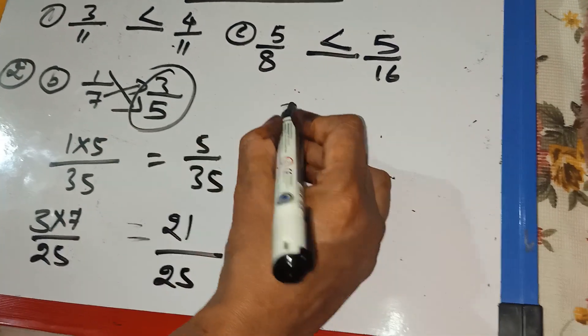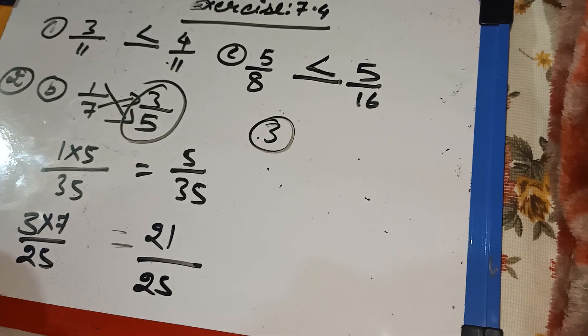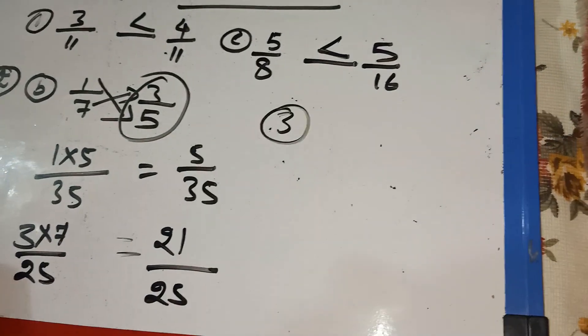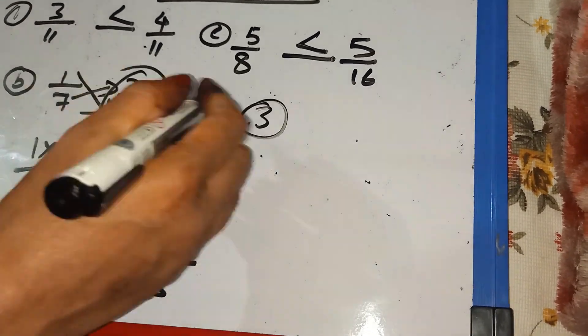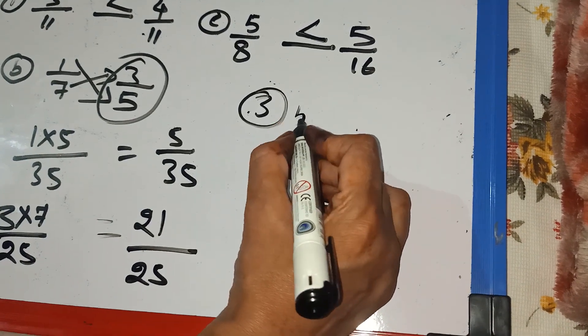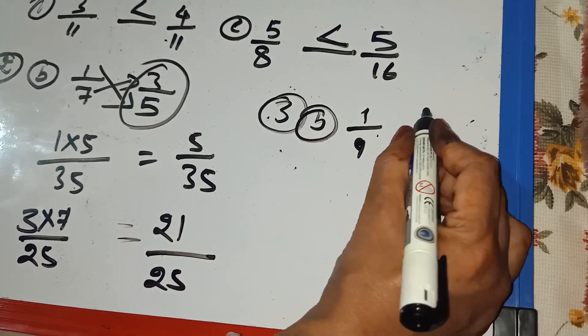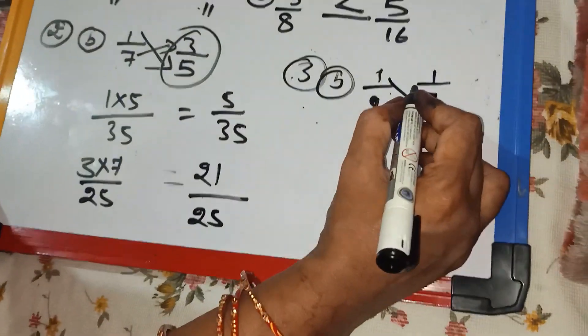Now, question number 3. Which is the smaller in each of the following pair of the fractions? So, it is also very simple and easy, children. So, from this, I am taking question number B. Look carefully. 1 by 9 and 1 by 7. So, again, by cross multiplication,